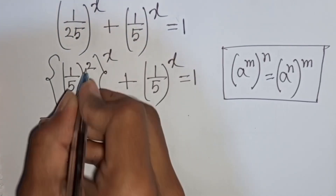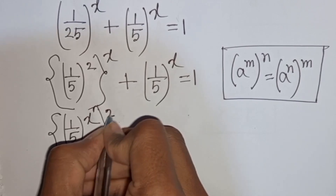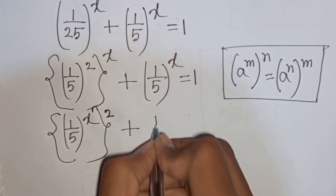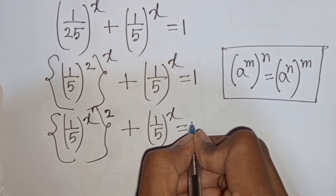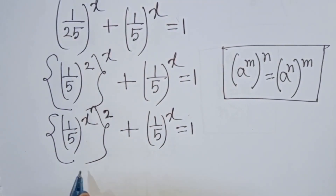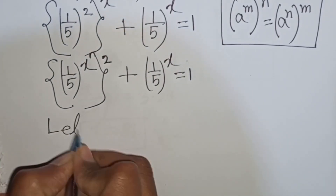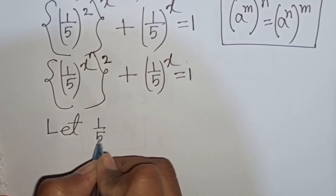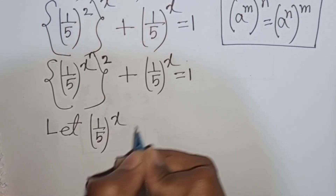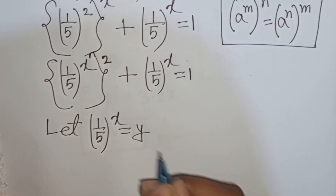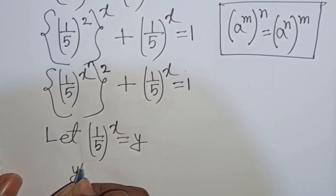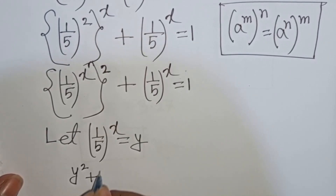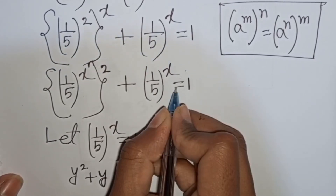Applying the exponential rule (A power m) power n equals A power mn, we get (1 by 5) power 2x plus (1 by 5) power x is equal to 1. Now we see (1 by 5) power x appears in both terms. So let (1 by 5) power x be substituted by y. Our equation will be y squared plus y is equal to 1.